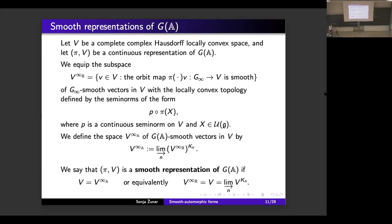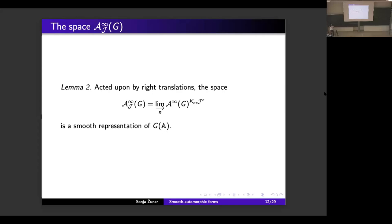We say that our representation π is a smooth representation of G(A) if we have the equality of spaces V and V∞_A as locally convex topological vector spaces. Equivalently, π is a smooth representation of G(A) provided that V equals V∞_R and V equals the strict inductive limit of the subspaces V^{K_n}. In other words, V is a smooth representation of G(A) if and only if it is a smooth representation of G_infinity and a smooth representation of G(A_F) in the standard sense. We have proved that the space A∞_J(G) is indeed a smooth representation of G(A).